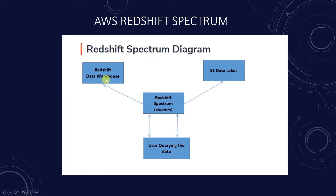AWS Redshift Data Warehouse is a costly data store as compared to S3. Redshift Spectrum helps to economize the storage cost by moving the infrequently accessed data away from its main storage such as Redshift, and keeping the frequently used data in RDS.